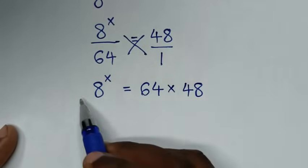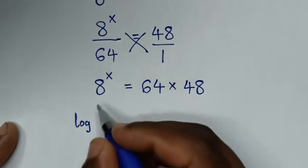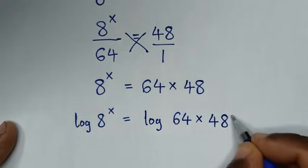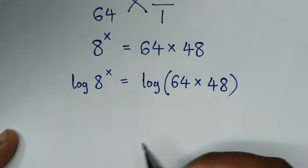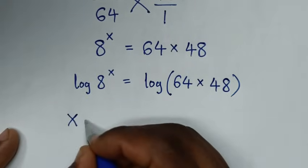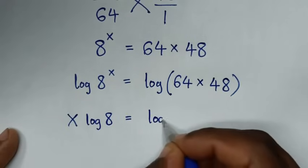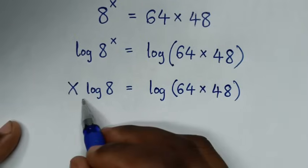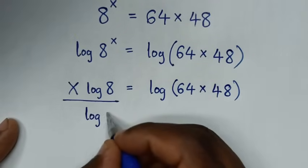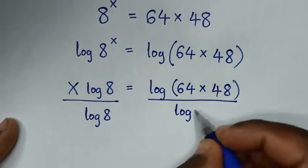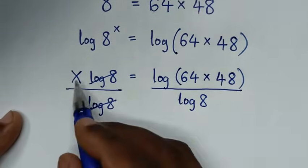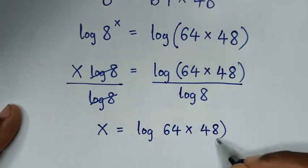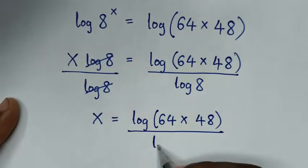So here 64 times 48. In the next step, 8 power of x is equal to 64 times 48. We'll divide by log of 8 on both sides — over log of 8 and over log of 8. This and this will cancel, giving x is equal to log of (64 times 48) over log of 8.